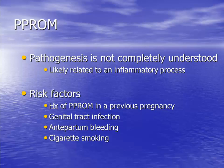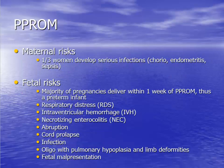We don't know why PPROM occurs, but it is likely due to an underlying inflammatory process of the fetal membranes and maternal uterine decidua. Major risk factors for the occurrence of PPROM are listed here. The problem with PPROM is that it increases morbidity for the mom and the fetus.